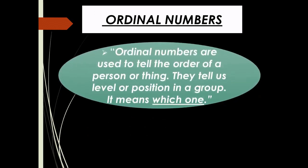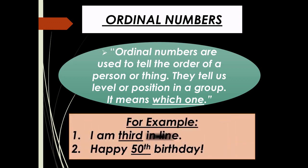Ordinal numbers are used to tell the order of a person or thing. They tell us the level or position in a group — it means 'which one', or we can say it shows order. For example, 'I am third in line' — here 'third' is the ordinal number showing the position of the noun.